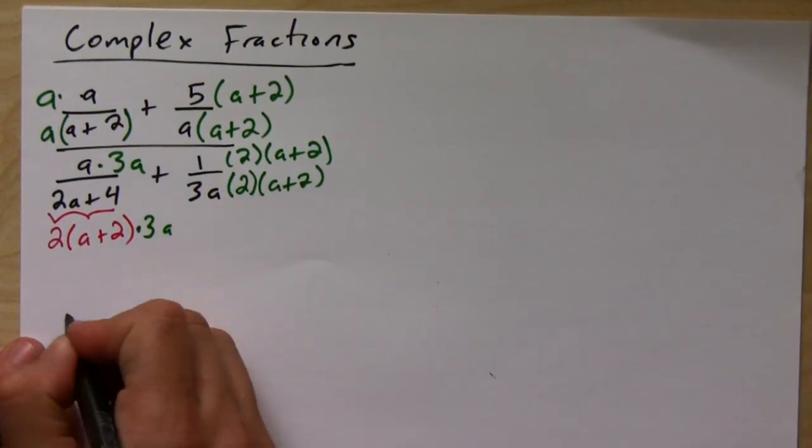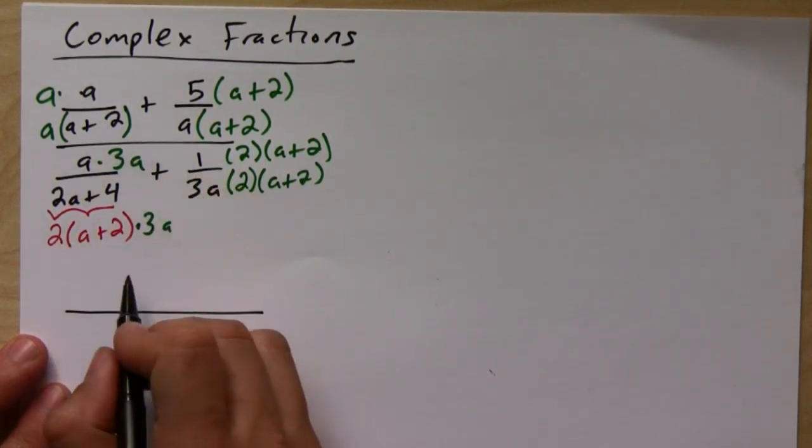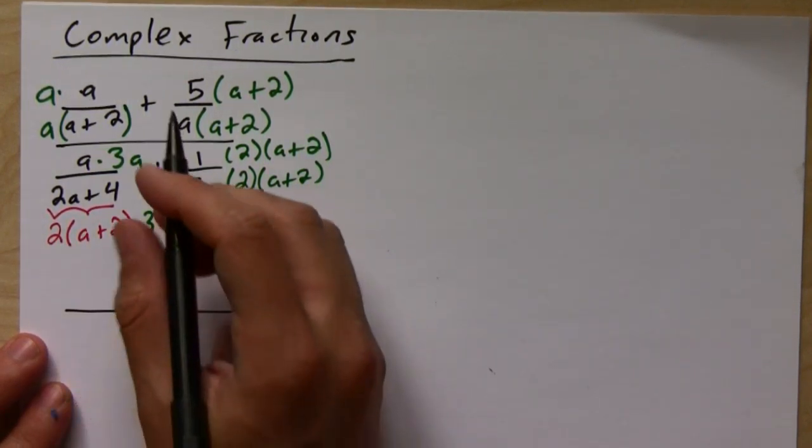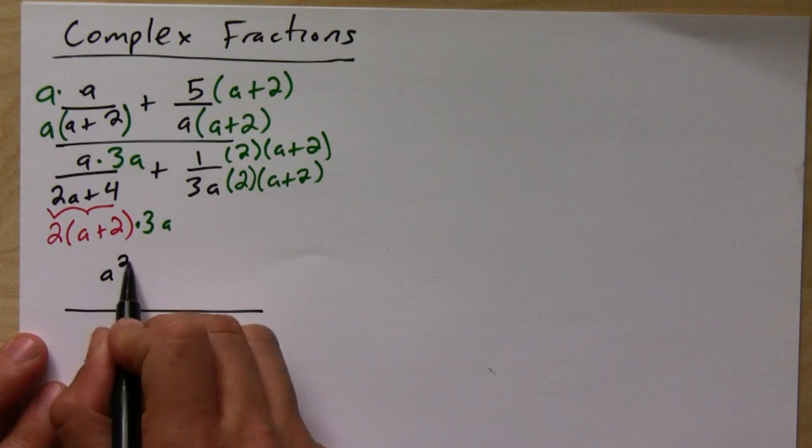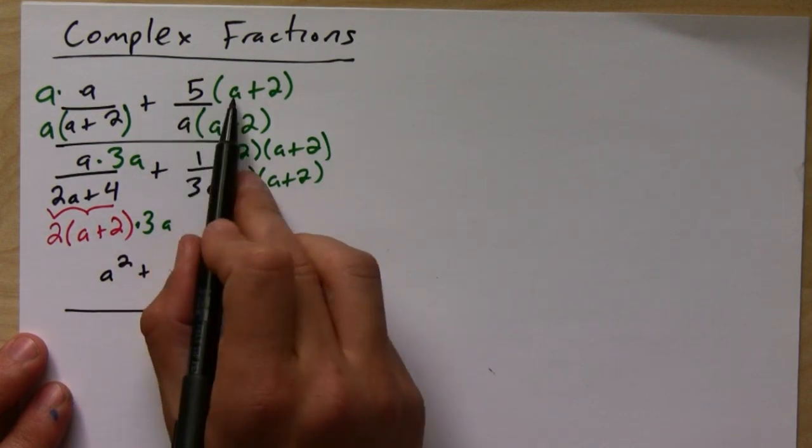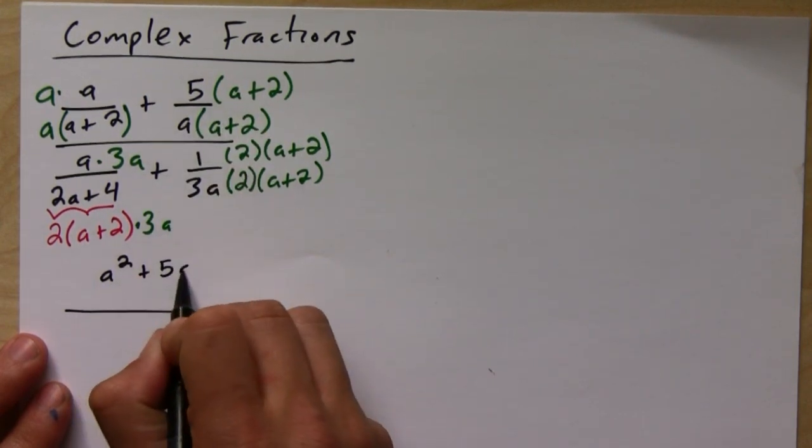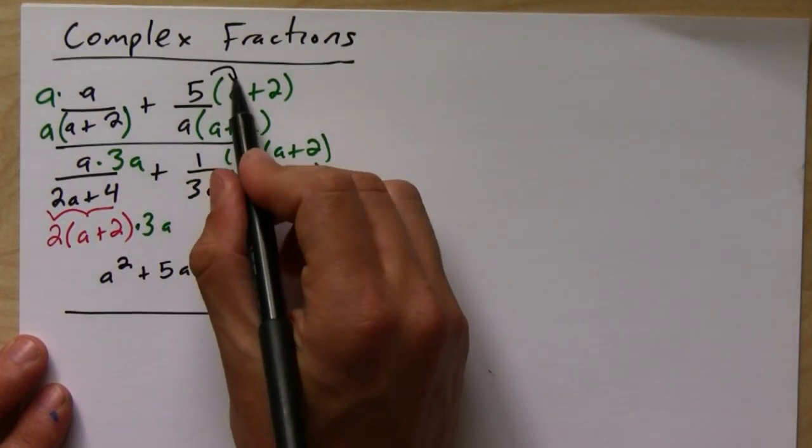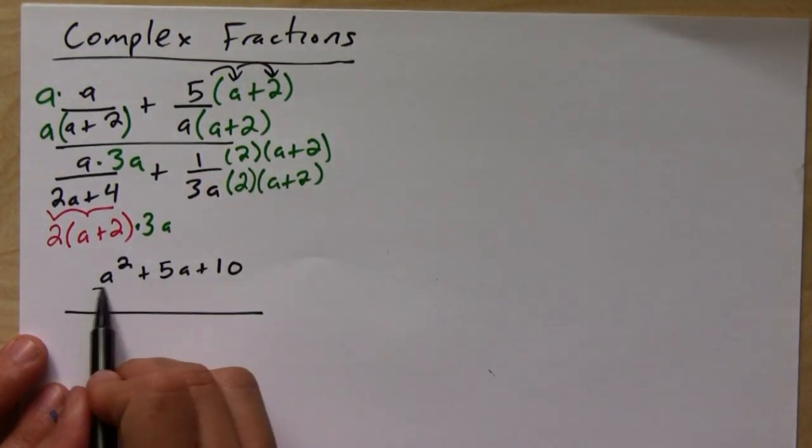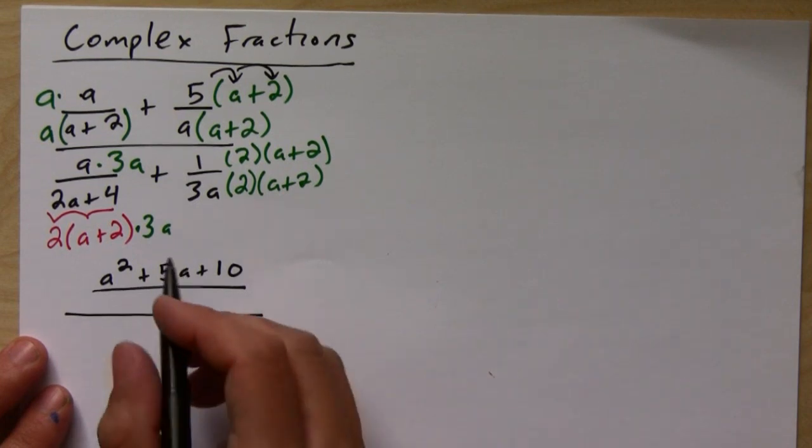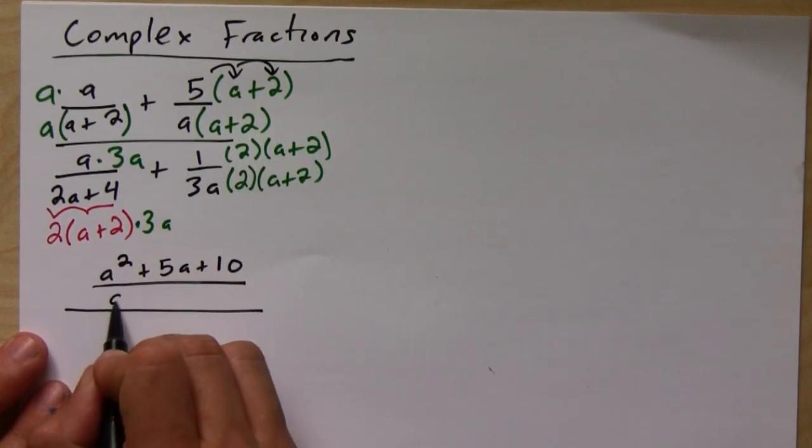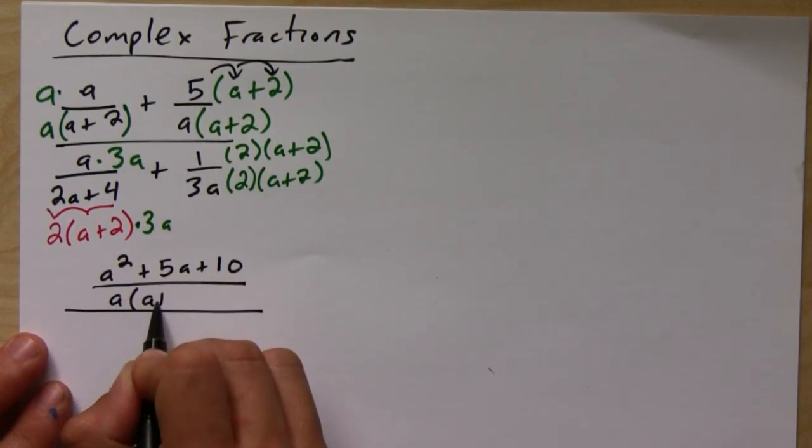Okay, so then on top I'm going to have one fraction. It's going to be a squared plus here I'm going to get 5a plus 10 if I distribute this guy right here. And then this is going to be all over the LCD, which is now a times (a plus 2).